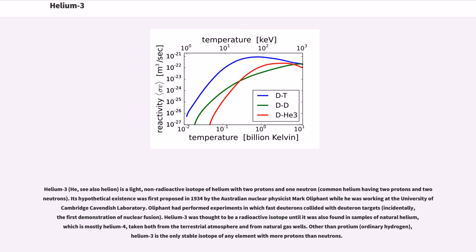Helium-3 is a light, non-radioactive isotope of helium with two protons and one neutron, unlike common helium which has two protons and two neutrons. Its hypothetical existence was first proposed in 1934 by Australian nuclear physicist Mark Oliphant while working at the University of Cambridge Cavendish Laboratory. Oliphant performed experiments in which fast deuterons collided with deuteron targets, incidentally the first demonstration of nuclear fusion.